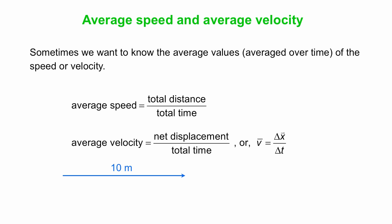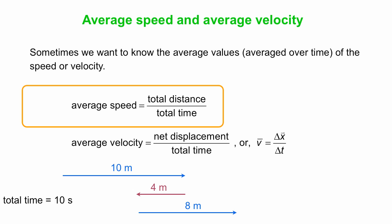Okay, so let's say you walk 10 meters to the right, and then 4 meters left, and then another 8 meters to the right. And all this happens at a total time of 10 seconds. What's your average speed? So the average speed, you just say, what's the total distance that I traveled? Add up all the individual distances, 10 plus 4 plus 8, 22 meters. Divide by the time. That's your average speed, 2.2 meters per second.